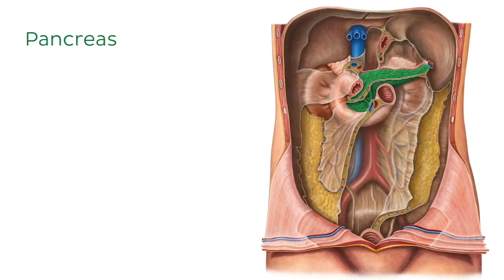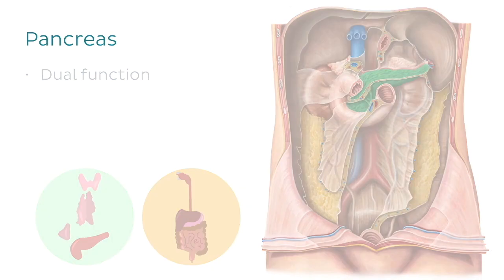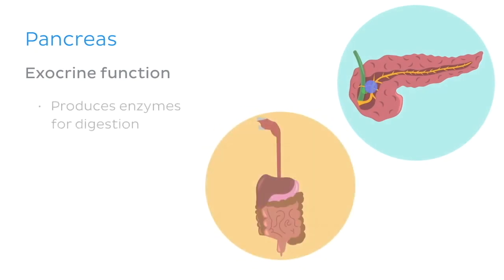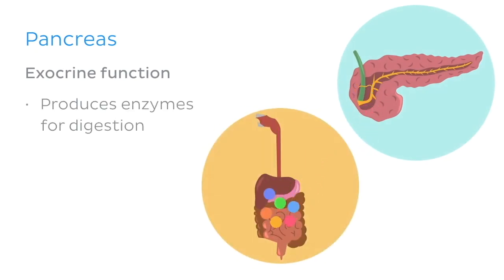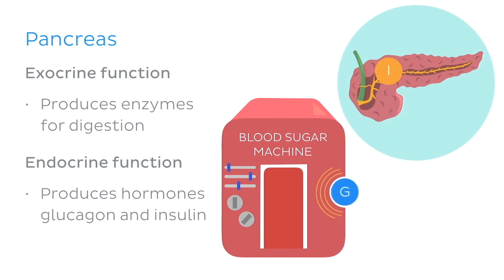So what is the pancreas? Despite previous misconceptions, we now know that it's a really important organ of both the digestive and the endocrine systems, meaning it has a dual function. About 80% of its functional tissue is dedicated to producing enzymes essential for digestion, making the pancreas an exocrine organ. The rest of it is dedicated to producing hormones like glucagon and insulin, which also make it an endocrine gland. These hormones are essential in glucose metabolism, which in simpler terms means they help to regulate blood sugar levels.